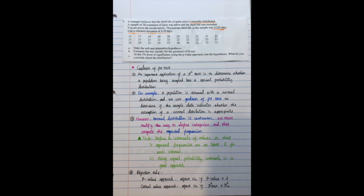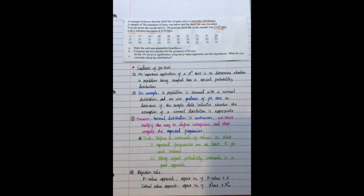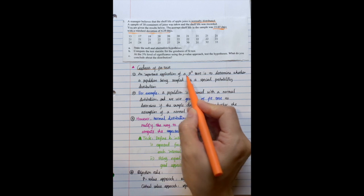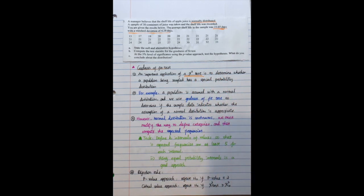Before we solve this question, let's just review section 3 talking about goodness of fit test of chapter 12. An important application of a chi-square test is to determine whether a population being sampled has a special probability distribution. So goodness of fit test is an important application of chi-square test.